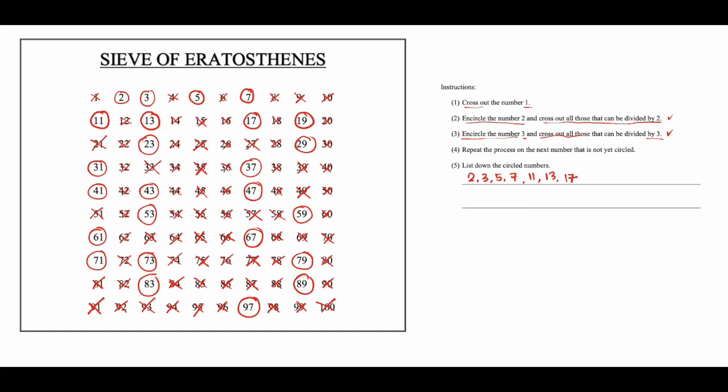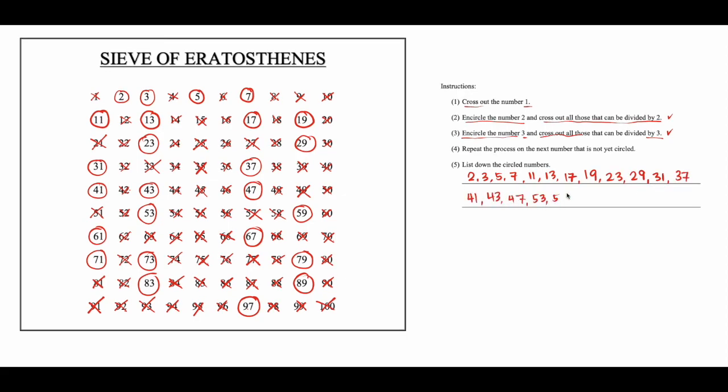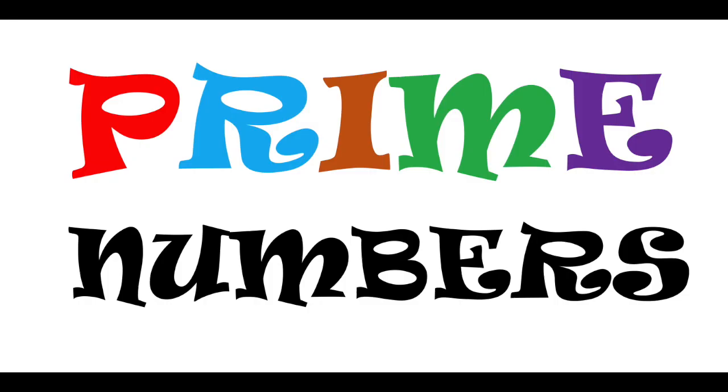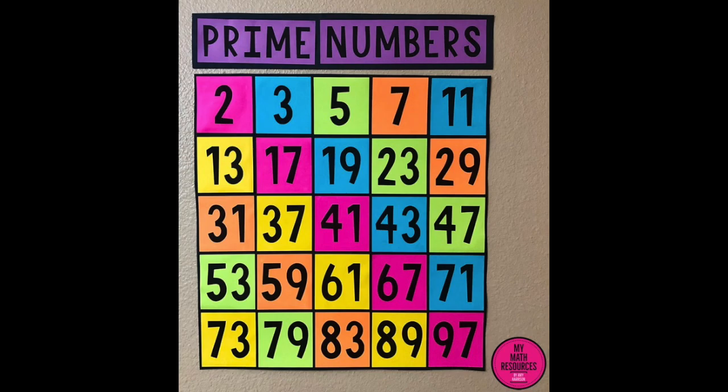Let us list down all the circled numbers. These numbers are a special kind of numbers. We call them the prime numbers. And we just have found these prime numbers below 100 using the sieve of Eratosthenes.